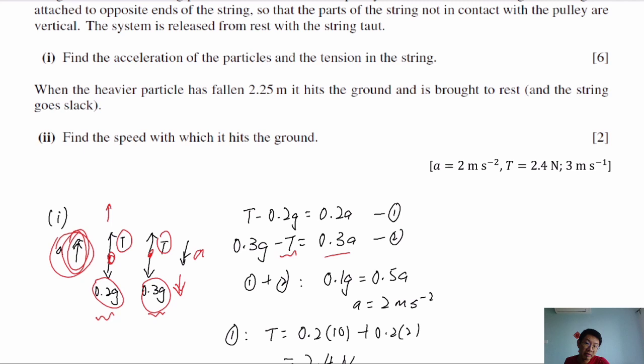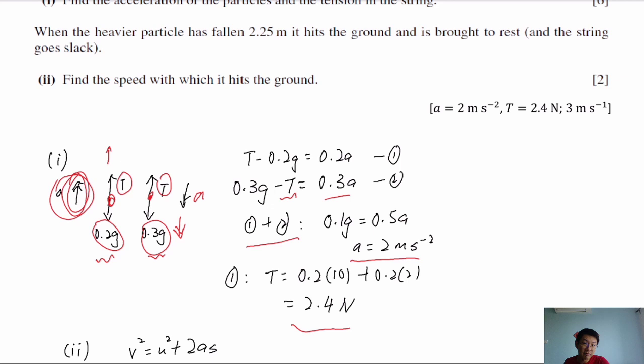Solving for T and A, we add up the two equations to get A = 2 m/s². Substituting this value of A into either equation gives us the tension T. This gives us both the acceleration and the tension.